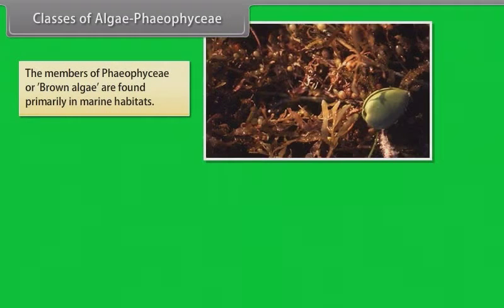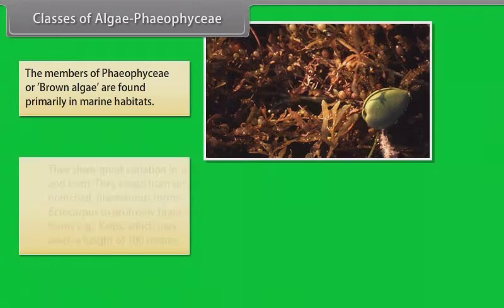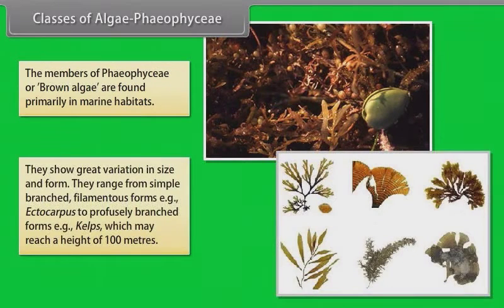Phaeophyceae. The members of Phaeophyceae or brown algae are found primarily in marine habitats. They show great variation in size and form. They range from simple branched filamentous forms, example Ectocarpus, to profusely branched forms, example kelps, which may reach a height of 100 meters.